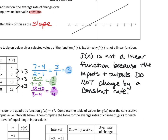Another thing you could note — this is not maybe the sentence we'd write down, but it's helpful to know: the average rate of change for this f(x) is not constant. The average rate of change is not constant in this graph, so it's not linear.